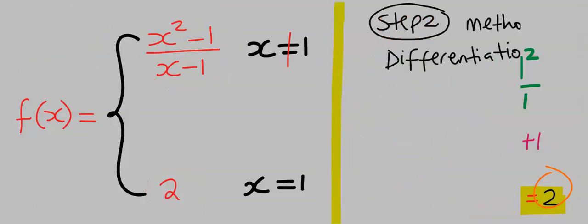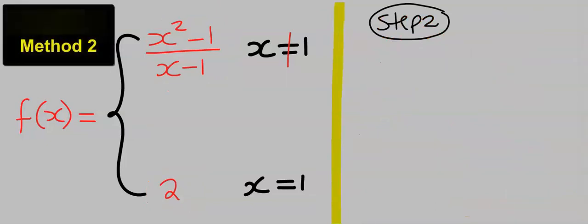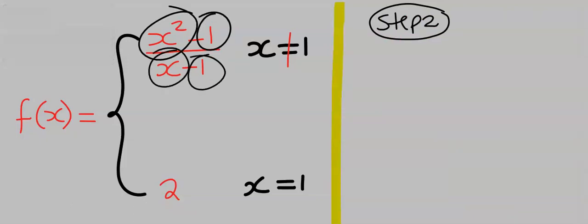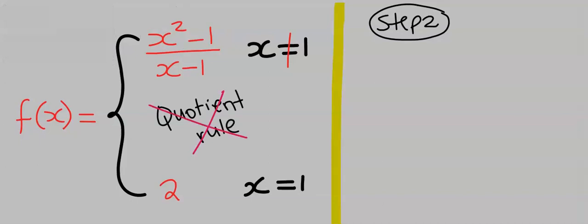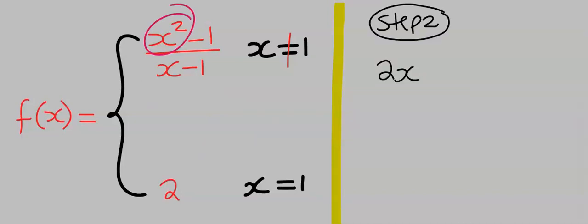We can apply another method by using differentiation. By using L'Hôpital's Rule, we are going to differentiate each of these variables independently. Never think of Quotient Rule here. It doesn't apply. Differentiate x squared, and you will get 2x.